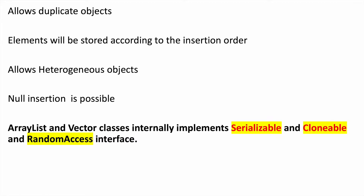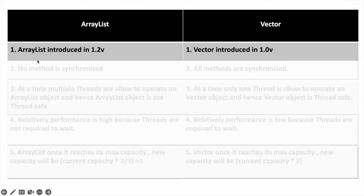Now we will see the main differences between these two classes. ArrayList was introduced in version 1.2, while Vector was introduced in version 1.0. That is, Vector is a legacy class.